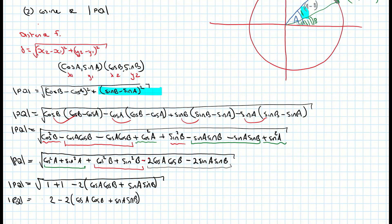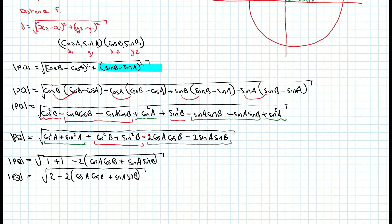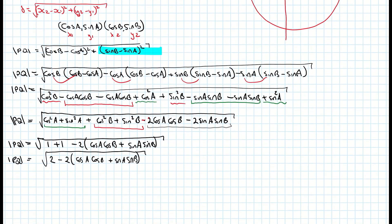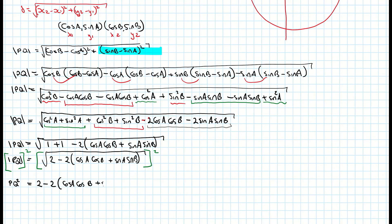To eliminate the square root, I square both sides. So PQ squared equals 2 minus 2 times (cos A cos B plus sin A sin B). That's as far as I can go with my distance formula.